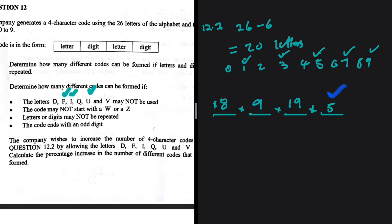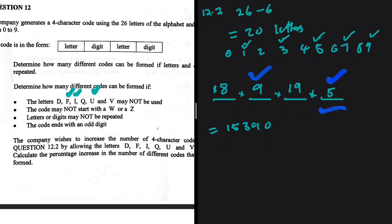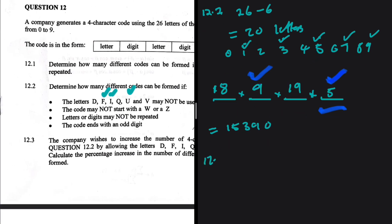Let me put this in my calculator: 18 multiply by 9 multiply by 19 multiply by 5. This equals 15,390. So W or Z should not occupy the first spot. I'm quite happy with what we've done there. This is the answer to 12.2.